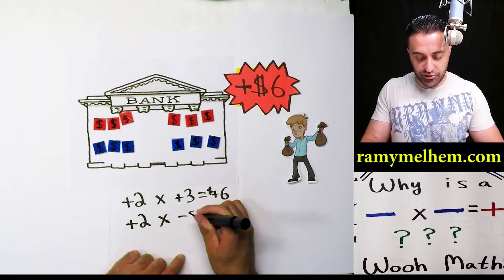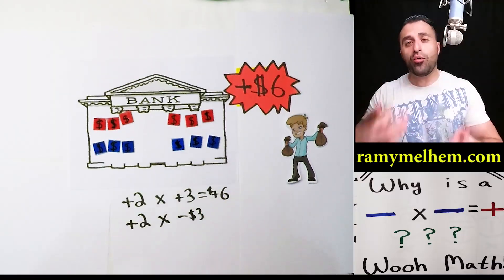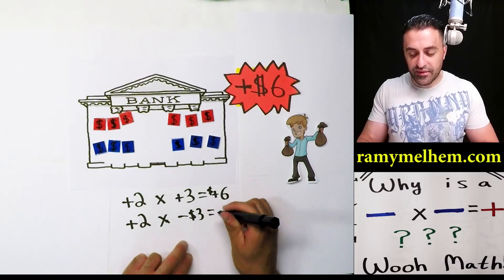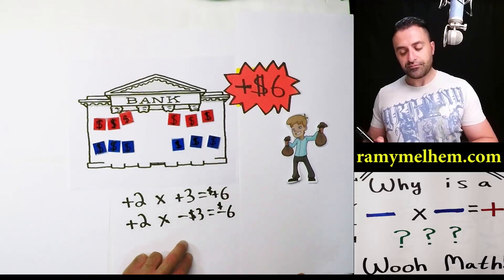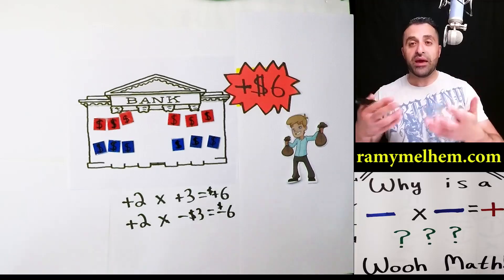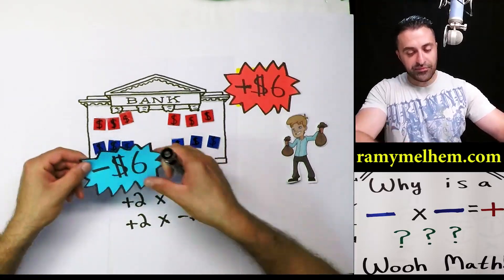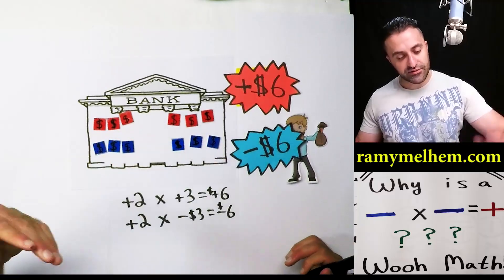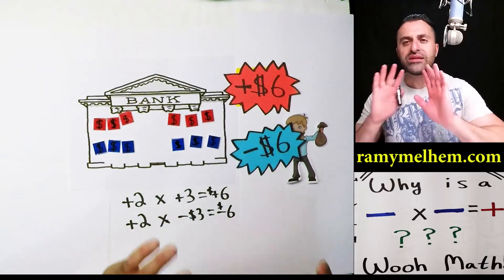Let's put a dollar sign here — two groups of negative $3. He's going to owe that money back. That's going to be worth negative $6. Two groups of negative $3 is negative $6.